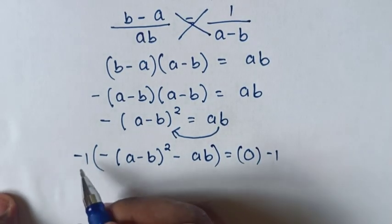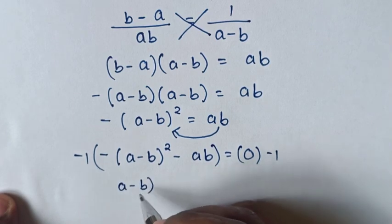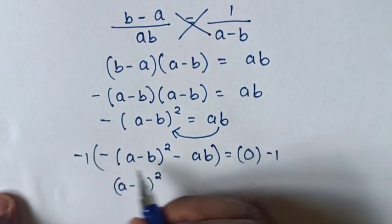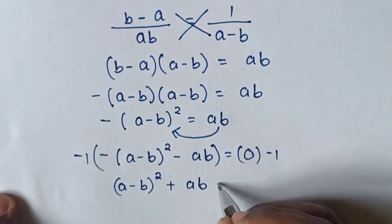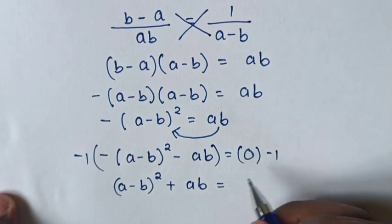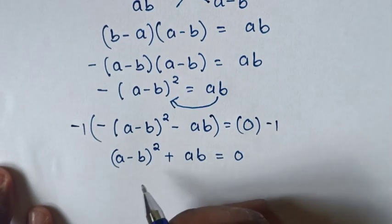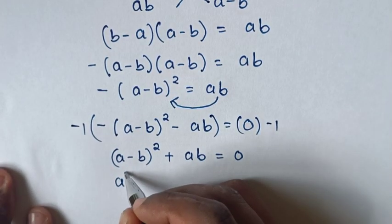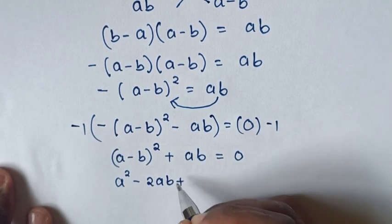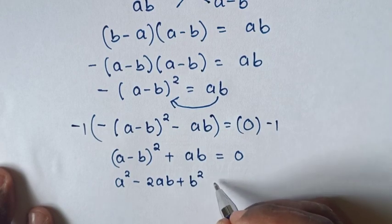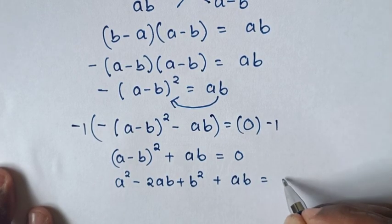Negative times negative will be positive, so a minus b squared, and negative times negative ab will be positive ab, is equal to 0. Then a minus b squared is the same as a squared minus 2ab plus b squared, plus ab is equal to 0.